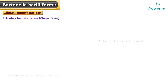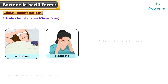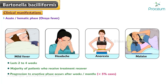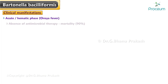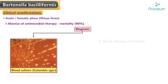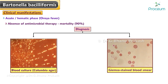Acute phase — Oroya fever: The acute or hematic phase generally begins with insidious onset of mild fever, headache, anorexia, and malaise. The acute phase lasts 2 to 4 weeks, and the majority of patients who receive treatment recover. Progression to the eruptive phase occurs after weeks or months in less than 5% of cases. In the absence of antimicrobial therapy, mortality can reach 90%. Diagnosis is established by blood culture or by identification of Bartonella bacilliformis organisms on a Giemsa-stained blood smear.